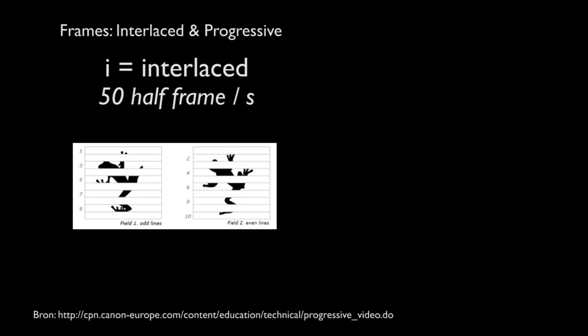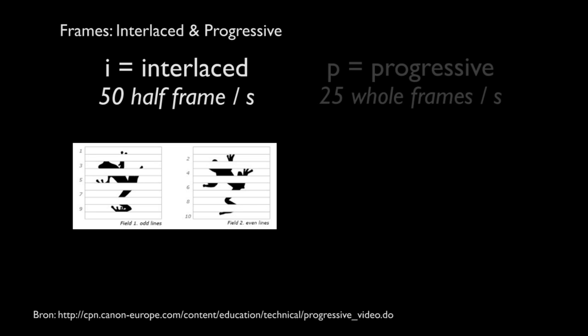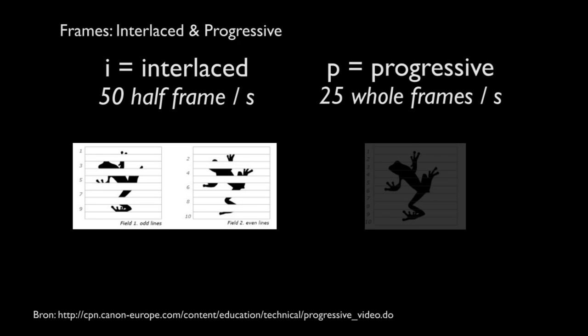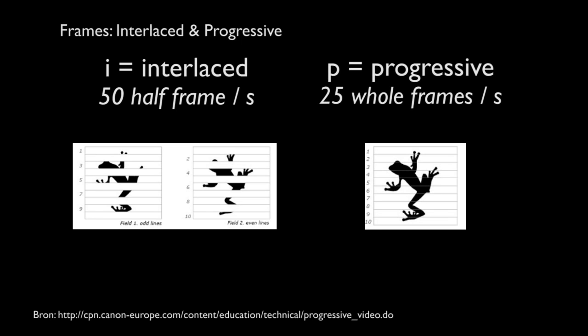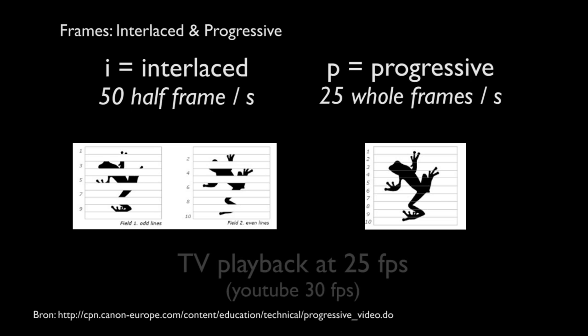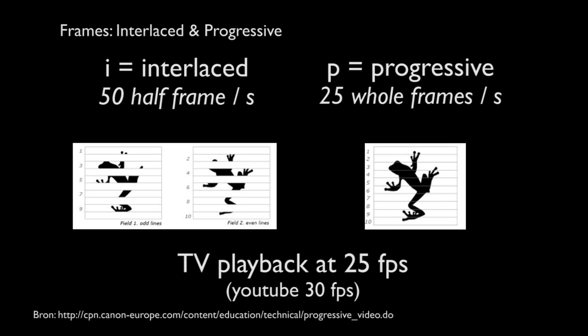Interlaced is 50 half-frames per second — the odd lines are recorded first and then the even lines are recorded afterwards, and they combine to form one whole frame. A progressive frame records everything at once, giving you 25 whole frames per second. When played back, both interlaced and progressive result in 25 frames per second.